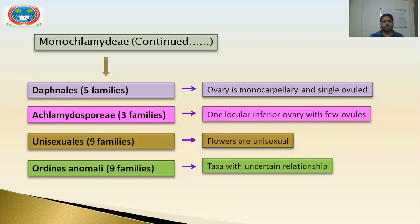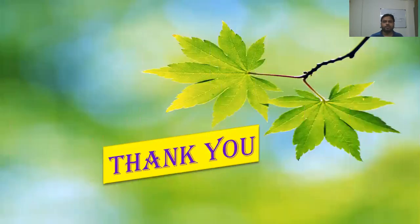In this video, we studied the class Dicotyledons in detail. Dicotyledons consist of three subclasses: Polypetali, Gamopetali, and Monochlamydae, with a detailed account of all the taxa present in class Dicotyledons. In the next video, we will discuss the remaining portion of the Bentham and Hooker system of plant classification — that is, class Gymnosperms and Monocotyledons. Thank you.